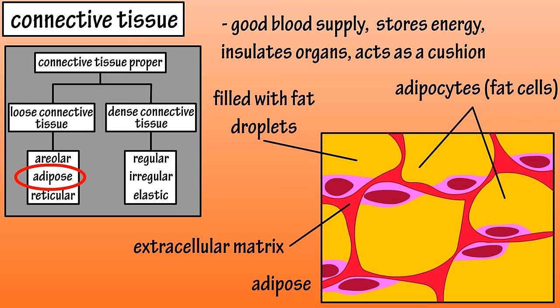Adipocytes are filled with fat droplets, which push the nucleus toward the plasma membrane. There are two types of adipose connective tissue: white and brown. Brown adipose tissue is found more in infants and newborns, and white adipose tissue stores energy, insulates some organs, and provides a cushion against shocks to the body. Adipose connective tissue is located throughout the body, as it can be found under the skin and surrounding various organs.